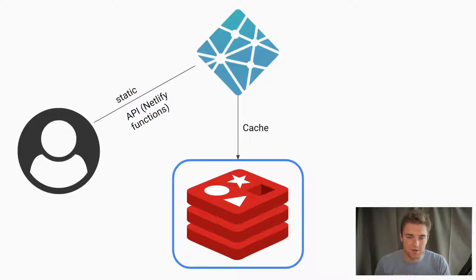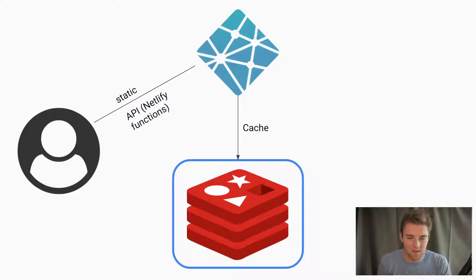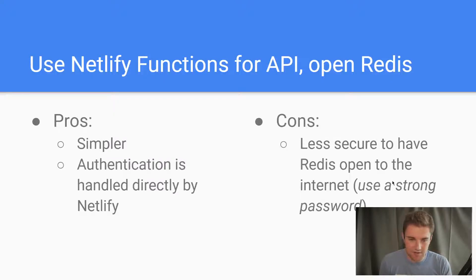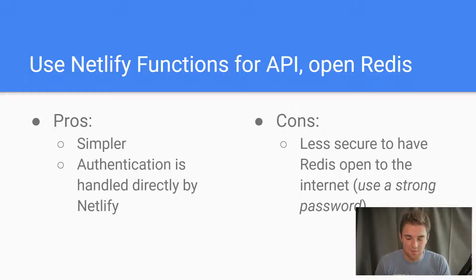The second solution is you create an API with Netlify functions, and you have an open Redis server accessible anywhere on the internet and handle your caching with that. This is technically the current method I have set up for my project — I'll probably switch it eventually. Using Netlify functions for the API and caching on a Redis server open to the internet is much simpler, and authentication is handled directly by Netlify, which is good. The problem is it's less secure — if people figure out which server your Redis instance is on, even with a password, Redis is really fast so you can kind of brute force it without too much difficulty.